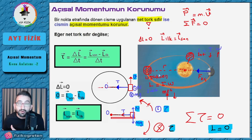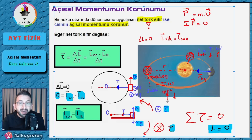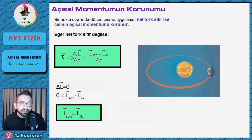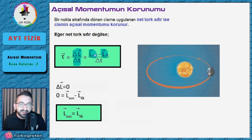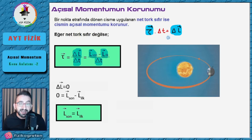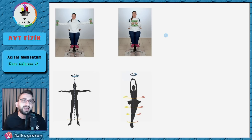Peki tork varsa ne olacak? Eğer bir tork varsa açsal momentum korunmaz ve tork = ΔL / Δt'dir, yani tork, açsal momentumun değişimi bölü zamandır. İşler-dışlar çarpımı yapılırsa tork × Δt = ΔL sonucu çıkıyor. Bu çok önemli bir sonuç: açsal momentumun değişiminin yönüyle torkun yönü birbirine eşit. Bu konuyu bir sonraki videoda detaylı ele alacağız.